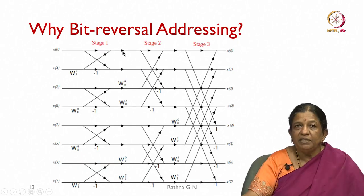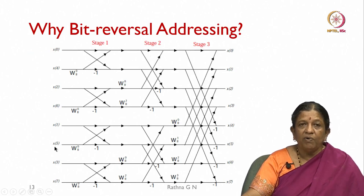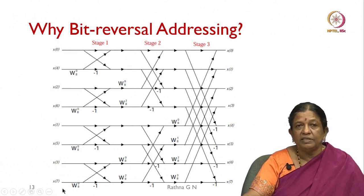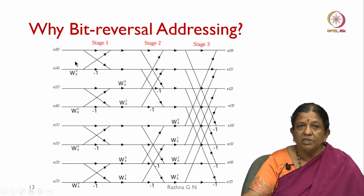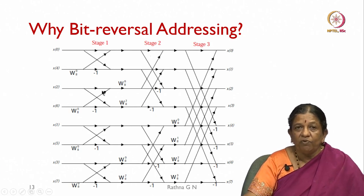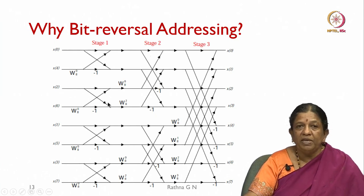To show why we need bit-reversal, the FFT butterfly figure has inputs x(0), x(4), x(2), x(6), x(1), x(5), x(3), x(7) and the output is in order. If the input is in bit-reversed order, the output will be in normal order; if the input is in order, the output will be in bit-reversed order. This is the 8-point FFT butterfly structure with 3 stages. The detailed design and real-time implementation will be discussed in the FFT lecture.